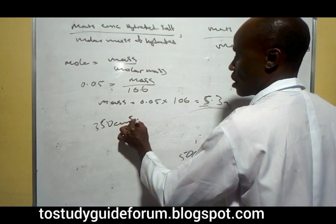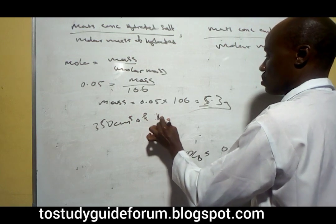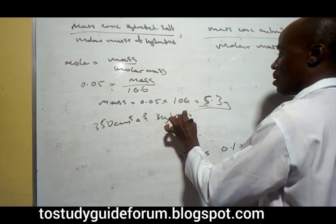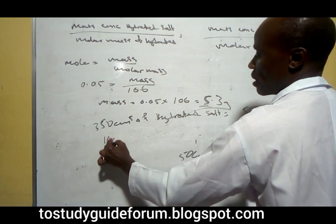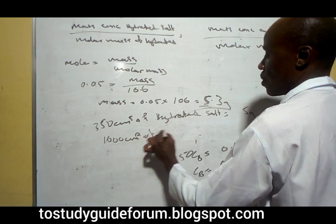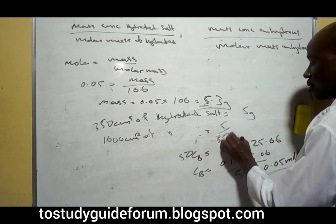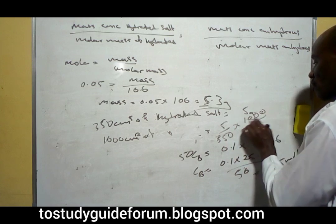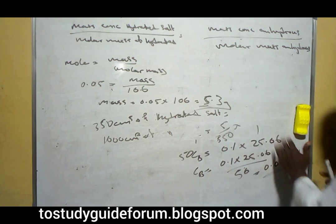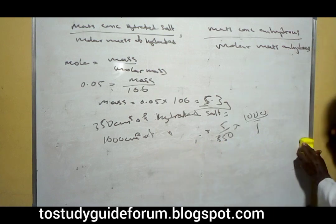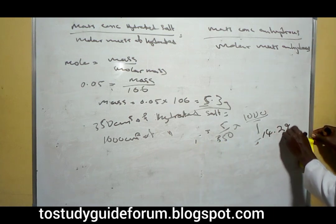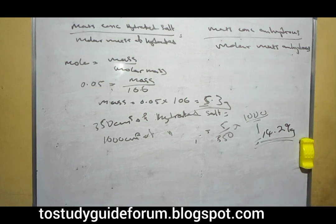0.05 times 106 gives us 5.3 grams. To get the mass concentration of hydrated salt, we are told that 250 cm³ of the hydrated salt contains 5 grams, so 1000 cm³ of the same salt will give us 5 over 250 times 1000, which equals 20 grams... this will give us 14.29 grams.